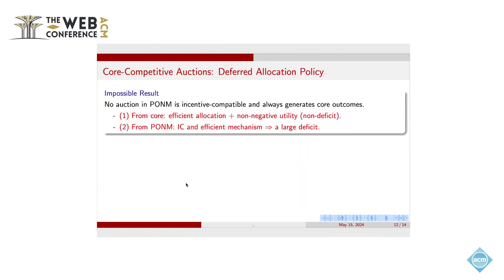So based on this result, we also provide another theoretical result about that no auction in this market is IC and always generates core outcomes. The idea is from two aspects. The first reason is that the IC and the efficient mechanism can sometimes induce a larger deficit for the seller.